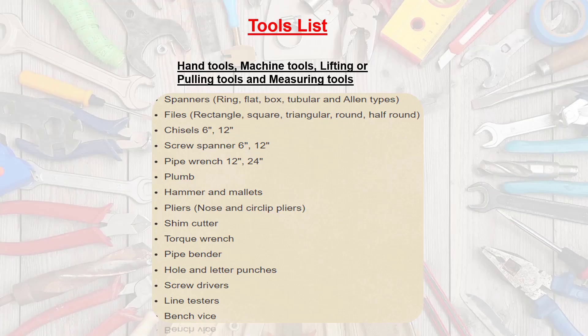What are the tools required for boiler operation and maintenance purposes? There are four types of tools required: hand tools, machine tools, lifting or pulling tools, and measuring tools.